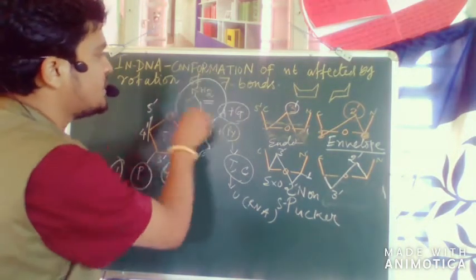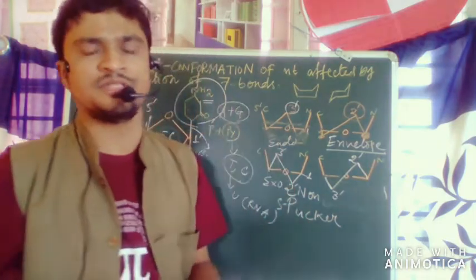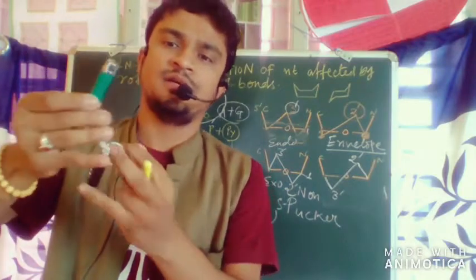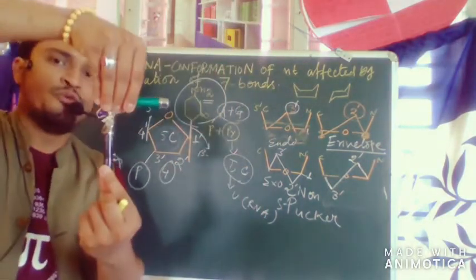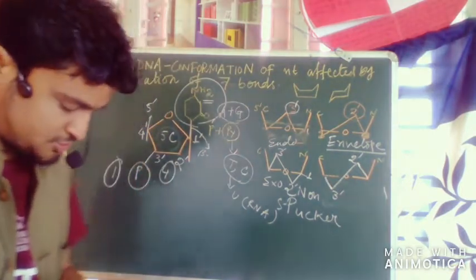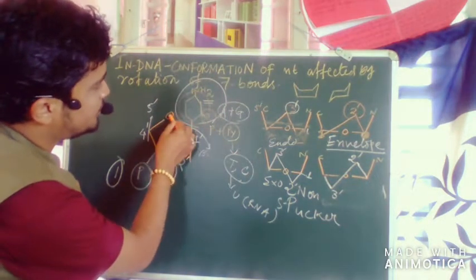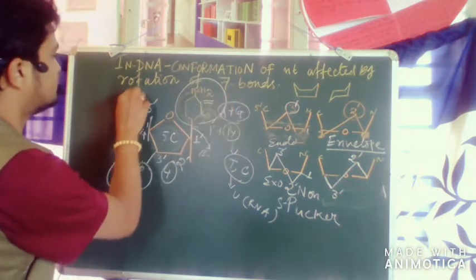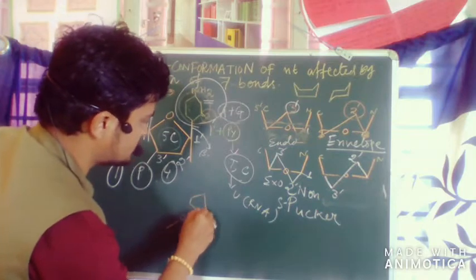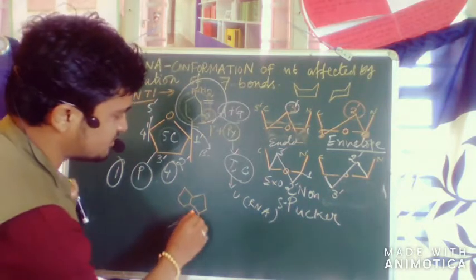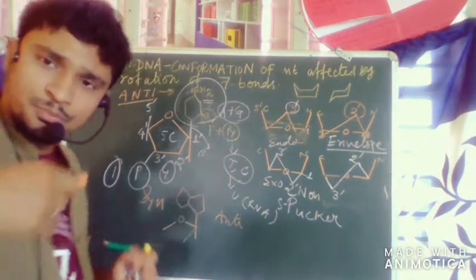For the nitrogen base, there are two configurations based on the rotation around the glycosidic bond. If the base rotates outward we call it anti configuration; if it rotates inward we call it syn configuration. For pyrimidine bases, the oxygen causes steric repulsion, so the base automatically rotates outward, giving the anti configuration. For purine bases, the molecule can easily move inward without interference, giving the syn configuration.